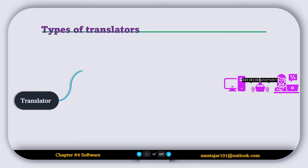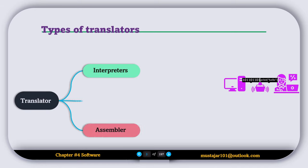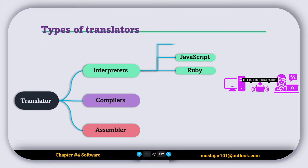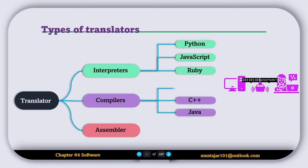Interpreters and compilers are utilized to convert high level language programs into machine code. Assemblers, on the other hand, are used to translate assembly language code into machine code.